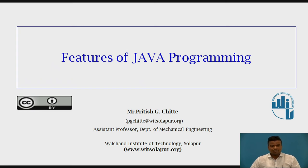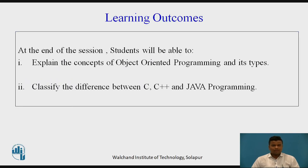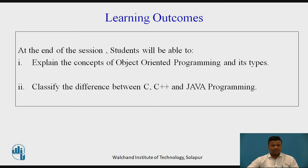Today we will see the features of Java programming. What are the learning outcomes? At the end of the session, the students will be able to explain the concepts of object-oriented programming and its types, and classify the difference between C, C++ programming and Java programming.